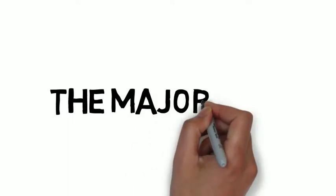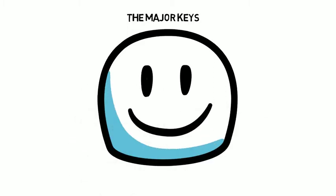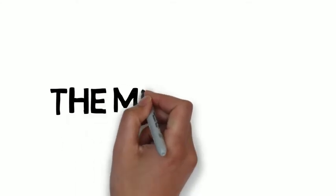The first type of key is called the major keys. If a song is written in a major key, it will tend to sound happier, lighter, or more upbeat. The second type of key is called the minor keys.